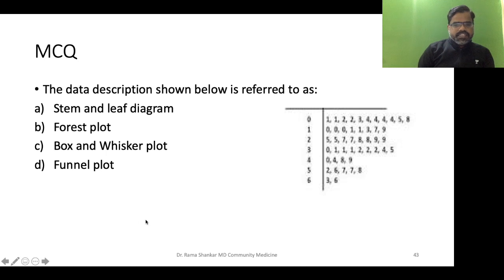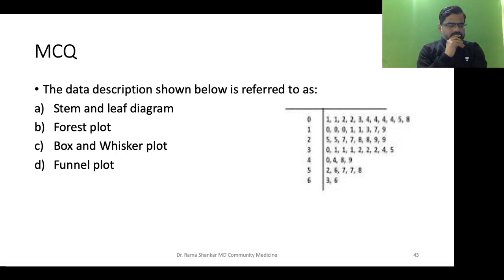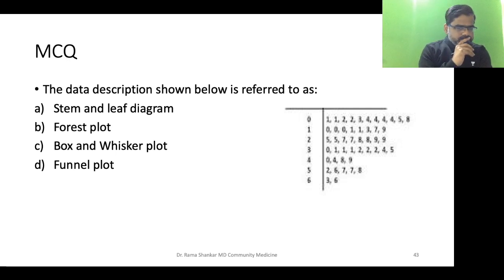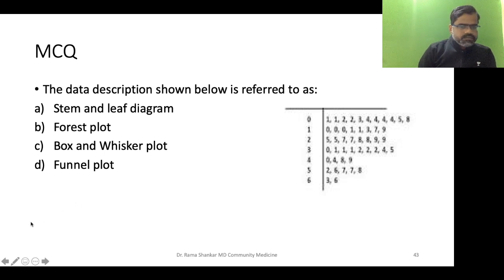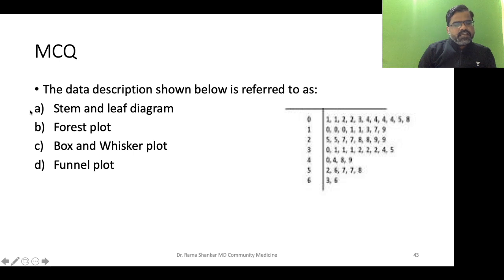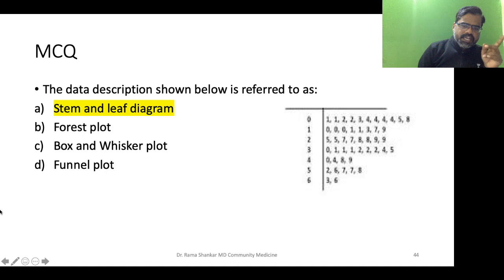Next question: the data description shown below is referred to as what? You have a picture with numbers 1, 2, 3, 4, 5, 6 and values like 1, 1, 2, 2, 3. Is it a stem and leaf diagram, forest plot, box and whisker plot, or funnel plot? Parag says forest plot, Maya says A (stem and leaf), Sunita also says A, and Debashish says stem and leaf — yes! This picture represents a stem and leaf diagram.